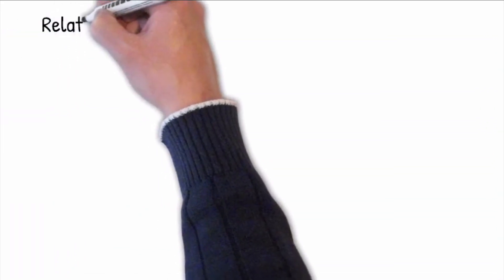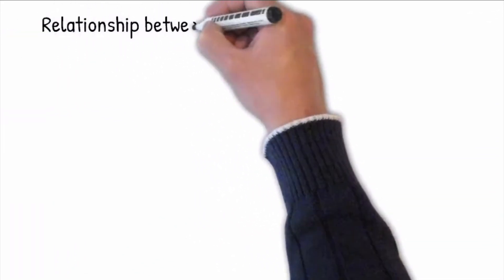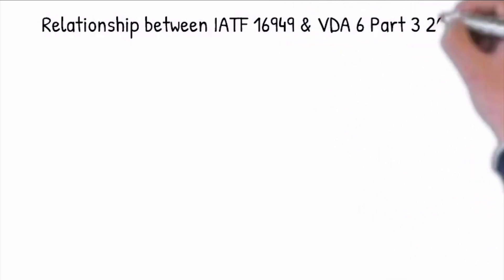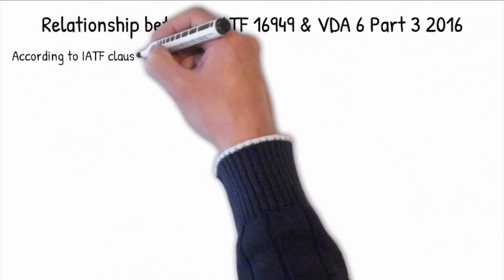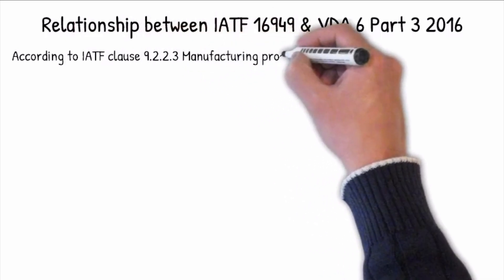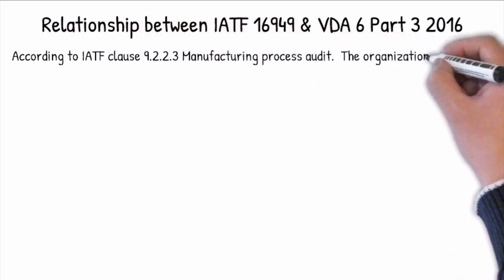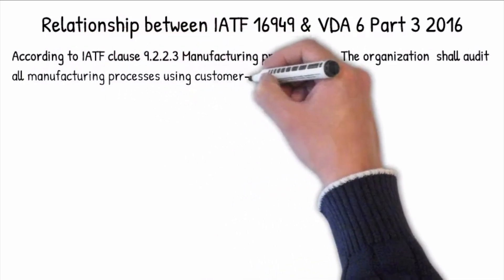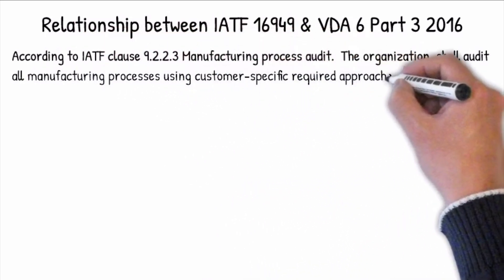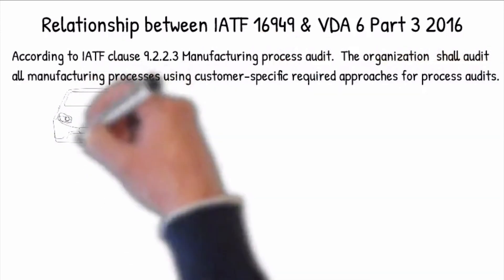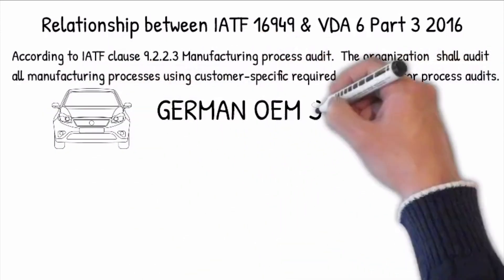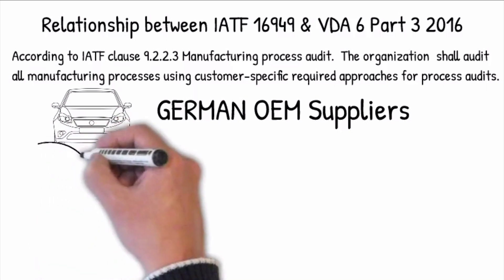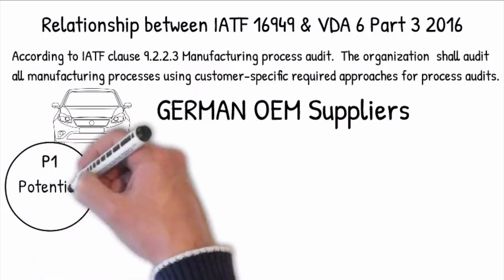The relationship between IATF 16949 and VDA 6 Part 3 2016: according to IATF clause 9.2.2.3 for manufacturing process audit, the organization shall audit all manufacturing processes over each three-year calendar period, covering all shifts, using the customer-specific required approach for process audits.